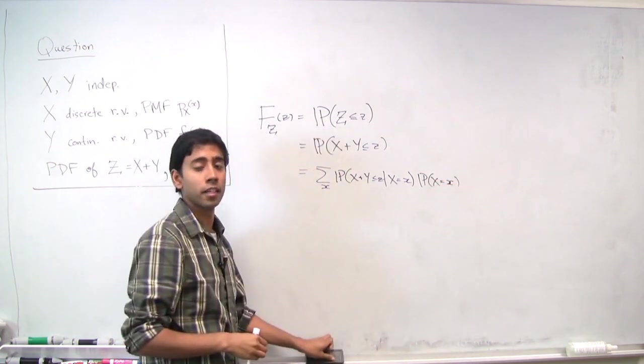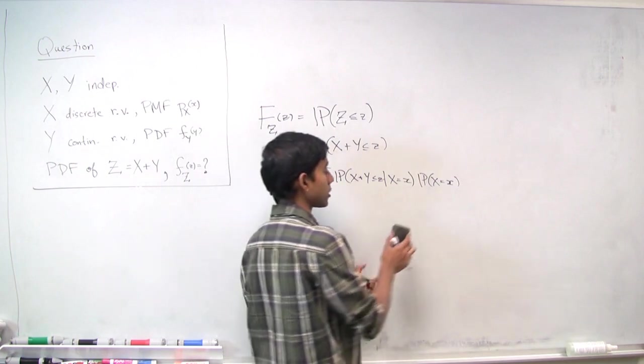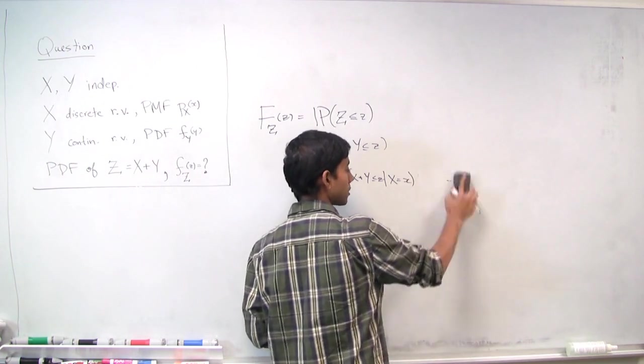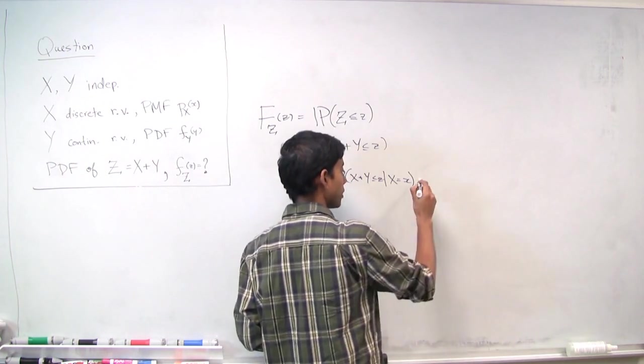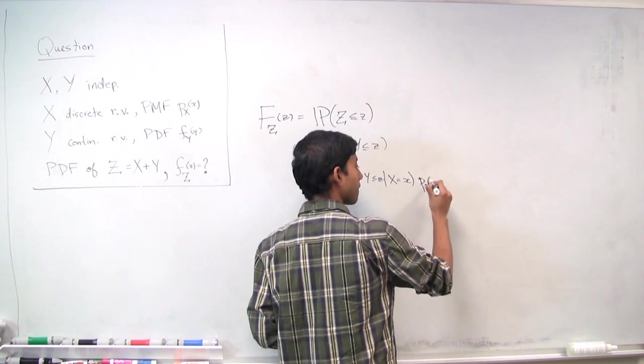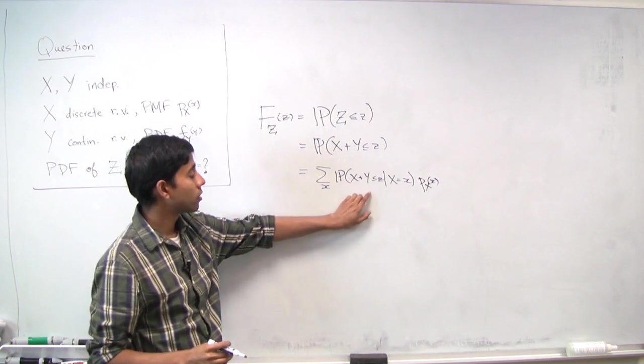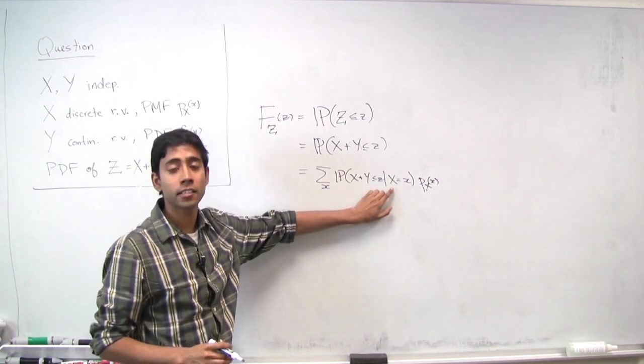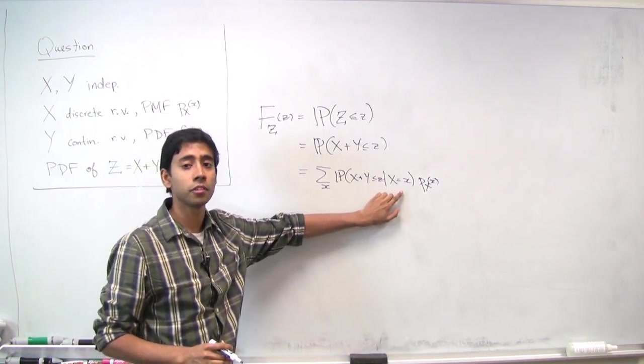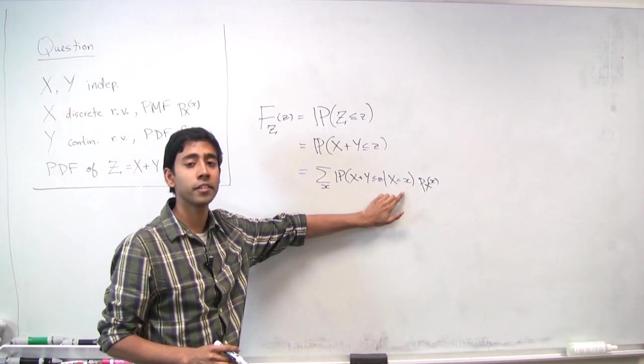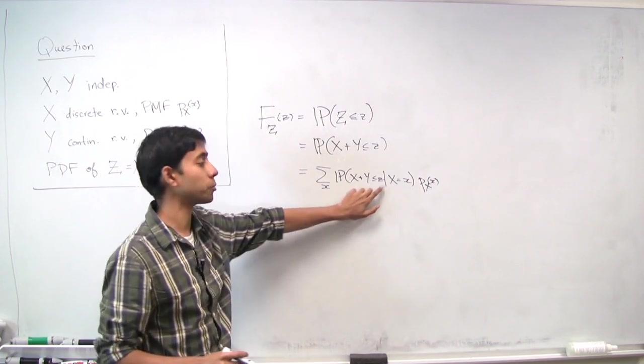This is just the probability that x equals little x, which is exactly equal to the PMF of x evaluated at x. Now we're fixing x equal to little x, so we can actually replace every instance of the random variable with little x.